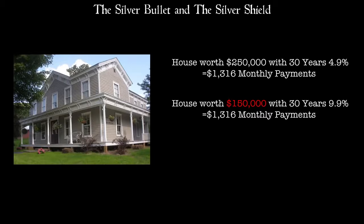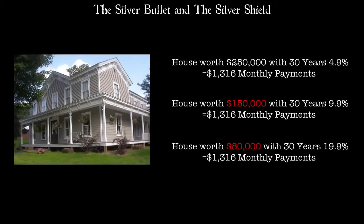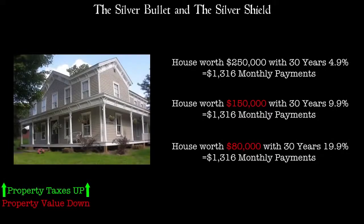People don't buy homes or cars based on the asset — they buy based on the monthly payments. What if interest rates went to 20%? That would drop that $250,000 home to $80,000. And all of that is contingent on that couple even having a job, a down payment, or being creditworthy, which is becoming increasingly harder to find. I also believe that during this collapsed environment, local governments will become so desperate that they will be raising property taxes on a declining housing market.